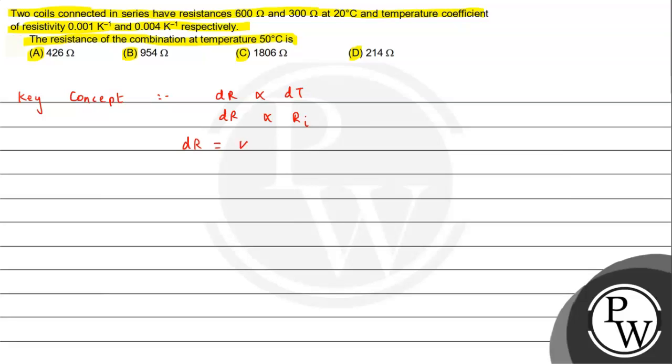So we can have dR equals alpha R_i times dT, where alpha is the temperature coefficient of resistance, also called the temperature coefficient of resistivity. After integration, the result is R_f equals R_i times (1 plus alpha delta T). This will be the formula we use.